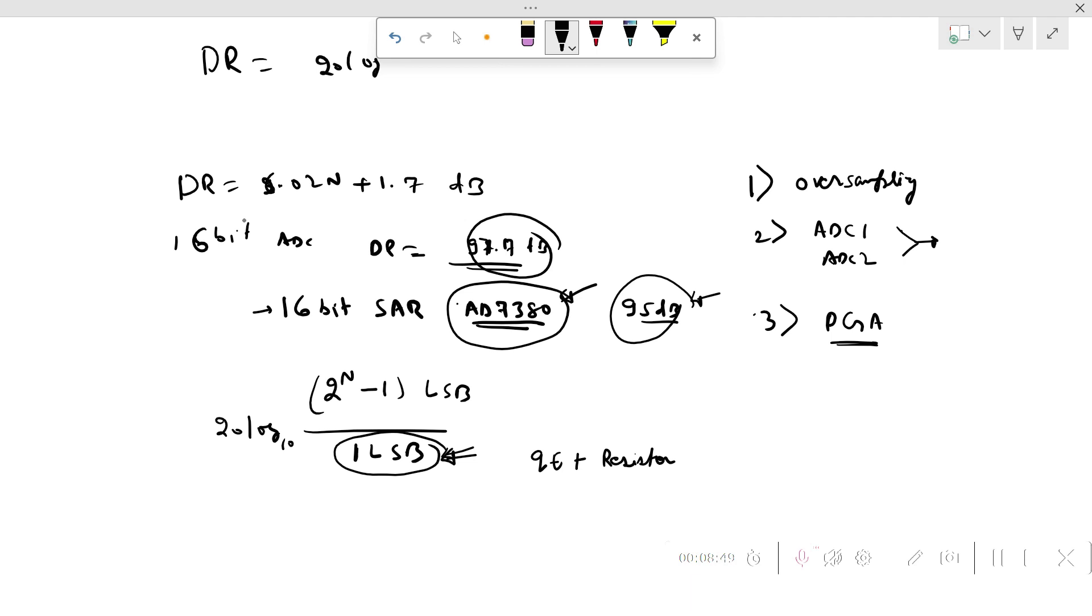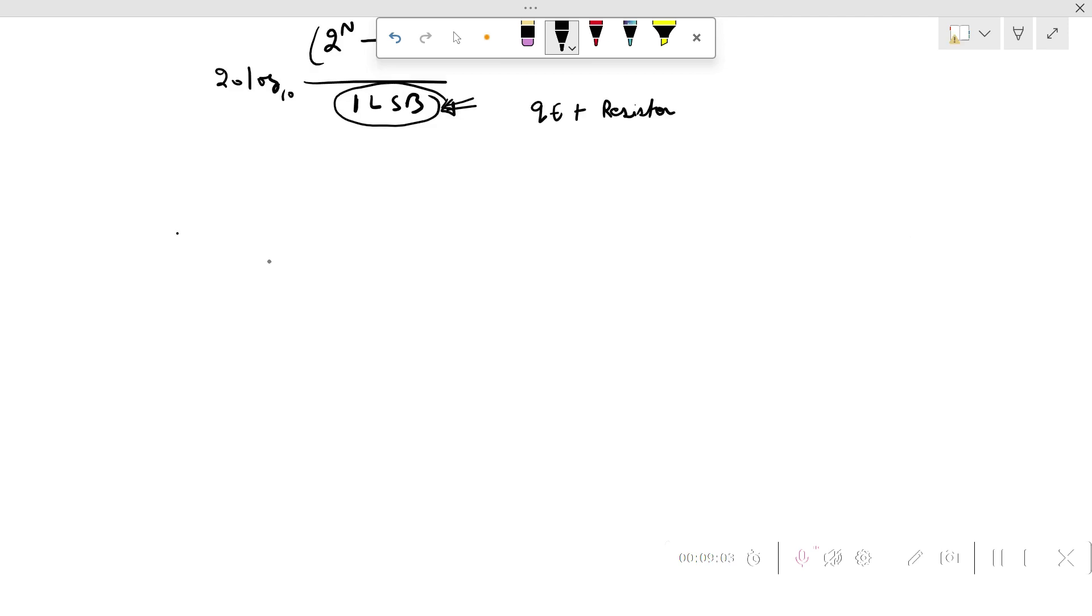Before we end the lecture, I'll draw your attention towards what does dynamic range mean in terms of voltage. If a 16-bit ADC—if I want to find out the minimum value of 1 LSB, the voltage equivalent to 1 LSB is V_reference divided by 2^16. Let's say the reference voltage—I'll consider the same ADC AD7380—the reference external voltage is 2.5 volts divided by 2^16.